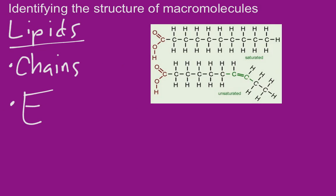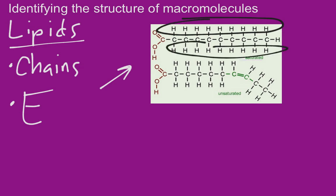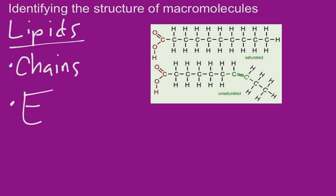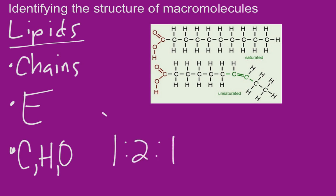Here we see some fatty acid chains. On the top we have a saturated fatty acid because it has the maximum number of hydrogens possible bound to the carbons with no double bonds. On the bottom we have an unsaturated fatty acid with a double bond — that's a monounsaturated fat. We can easily identify this as a lipid because it only has carbon, hydrogen, and oxygen, is not in a 1:2:1 ratio, and is clearly in a long chain with a carboxyl group on the end.